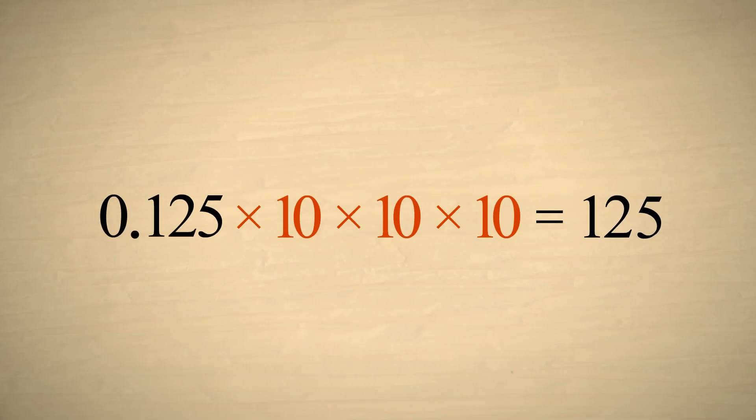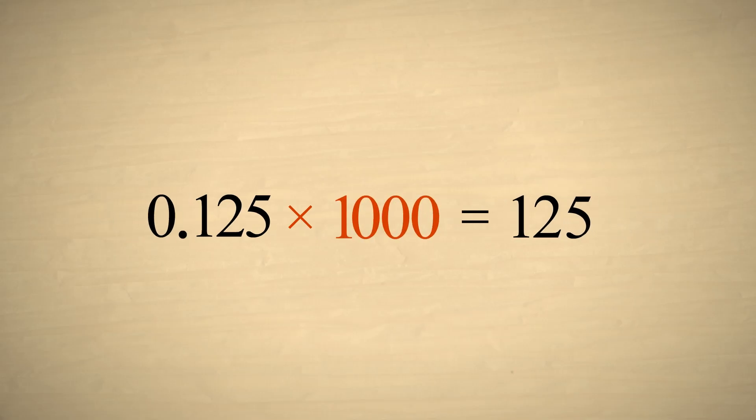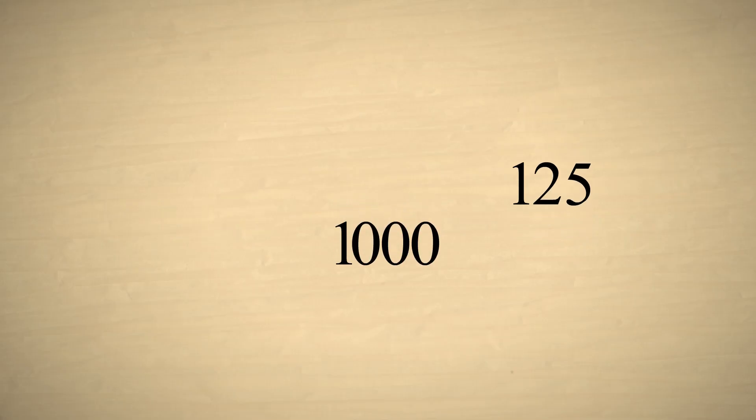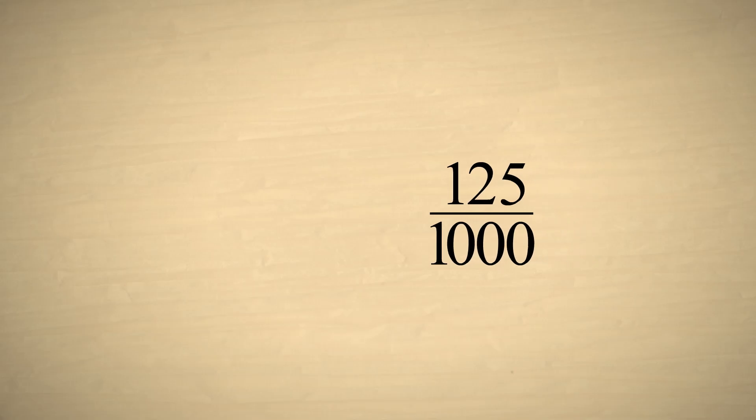So by multiplying our decimal number by ten three times, which is the same as multiplying by one thousand, we have produced an integer which is one thousand times the original number. If we then divide the integer by one thousand, the result will be equal to the original number. So 0.125 is equivalent to the fraction 125/1000.